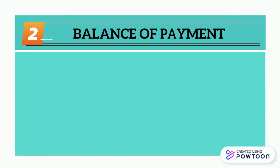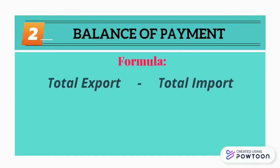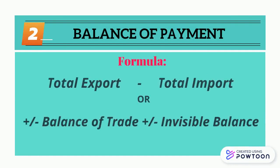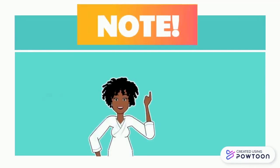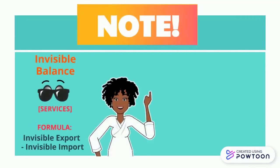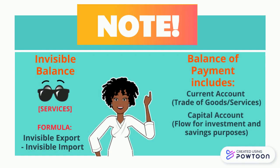Then there's our balance of payments. The formula is total exports minus our total imports, or we take our balance of trade and add or subtract our invisible balance. The invisible balance — which covers services — is the invisible exports minus the invisible imports. The balance of payments calculation also includes our current account balances and the capital account balances.